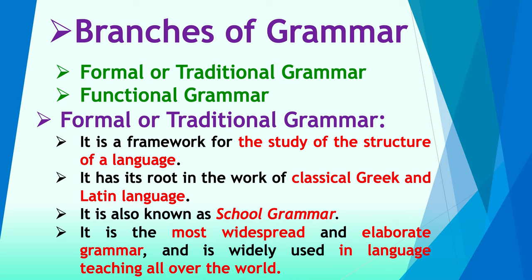It has its root in the work of classical Greek and Latin languages. Formal or traditional grammar finds its root — traces its root — in classical languages like Greek and Latin. At one point in the history of language, Greek and Latin were very famous, and other languages like English used to derive all their grammatical rules from those languages. Therefore, formal or traditional grammar has its root in classical languages like Greek and Latin.